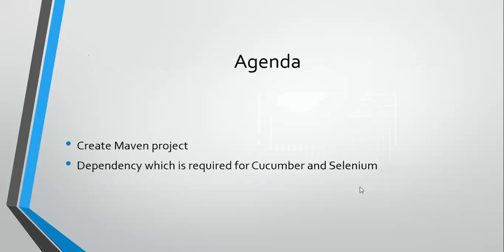We'll create a Maven project today and add all the dependencies required for Cucumber and Selenium. The feature file and test runner from the last video will be directly copied here since we're reusing the same code. The main goal of this video is just to convert our plain Java project into a Maven project.